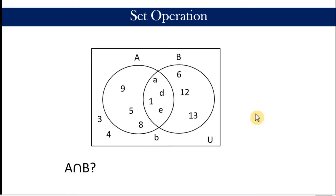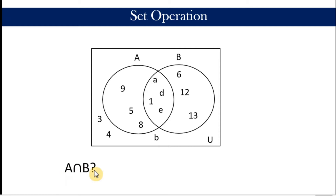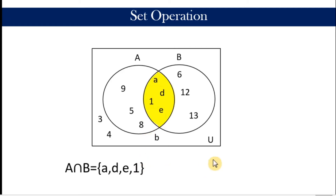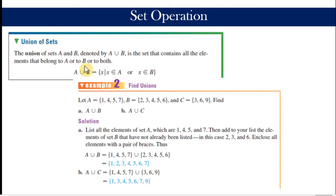Using Venn diagrams, we can easily identify the intersection between or among sets. For instance, if we are given a Venn diagram with two subsets — set A and set B — the intersection of A and B is the set of all elements common to the two sets. In our Venn diagram, we can easily find that intersection: it's the elements included in the overlapping region. Our answer should be the set containing A, D, E, and one.